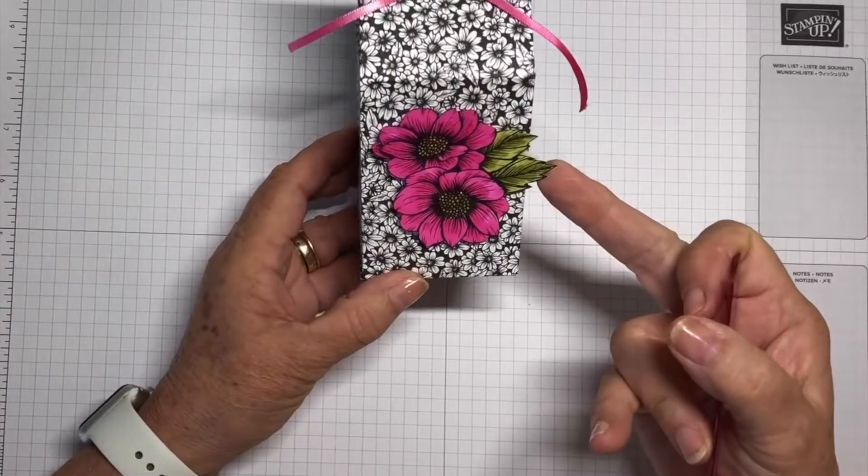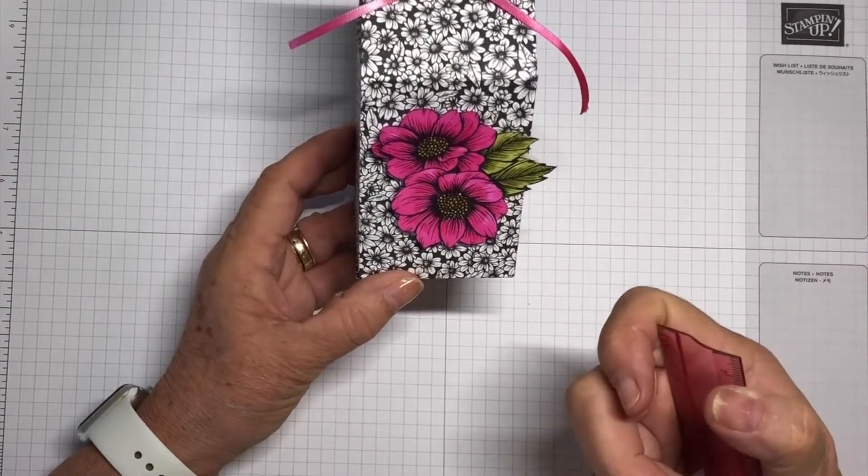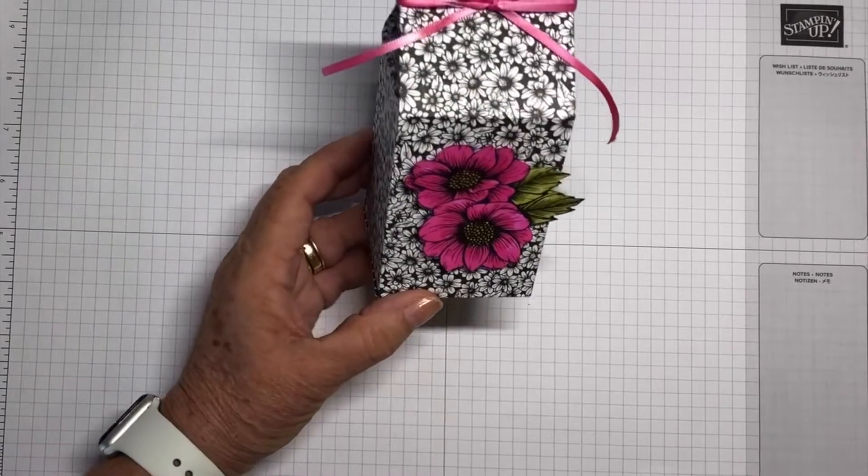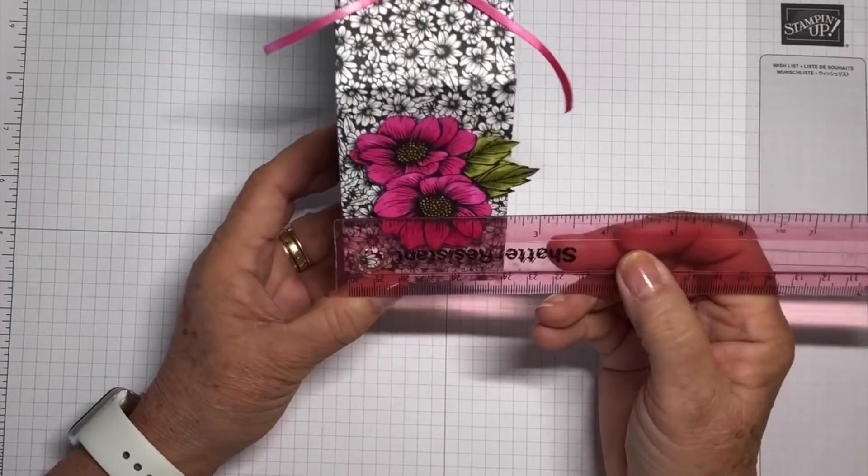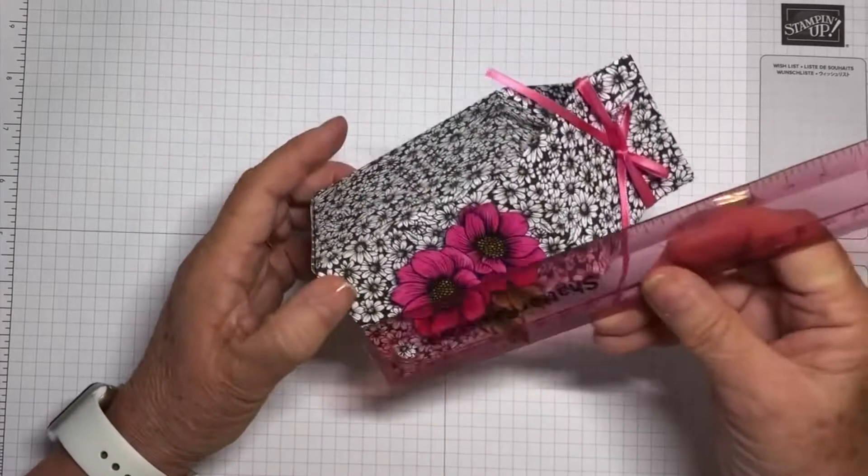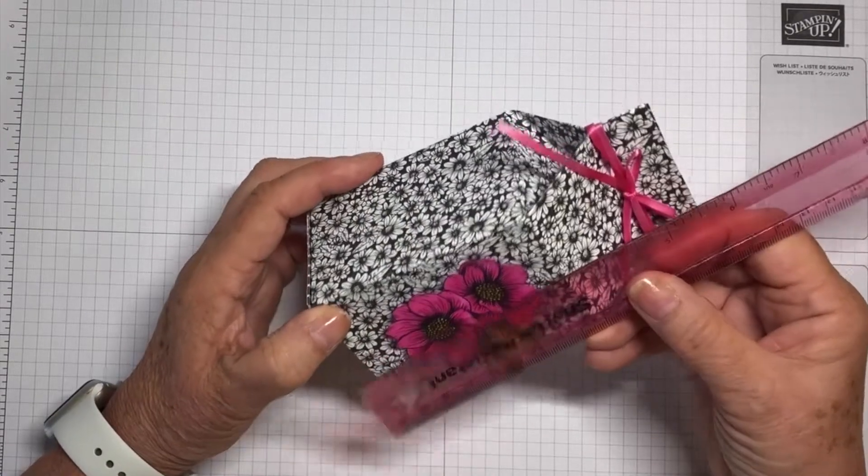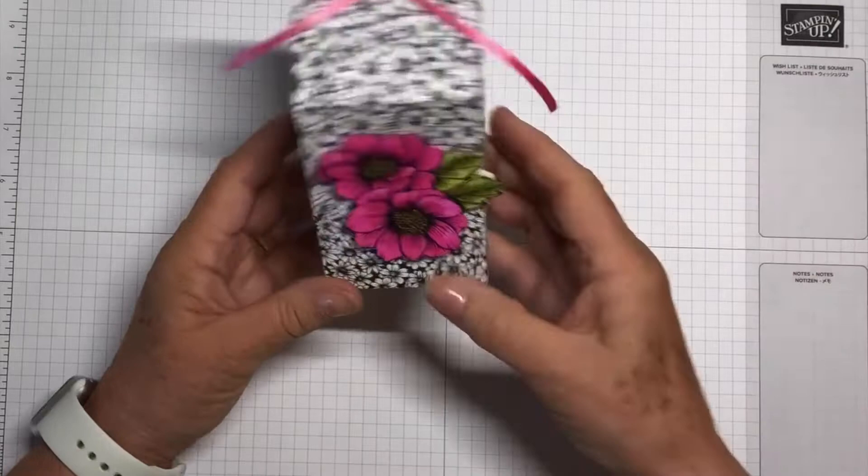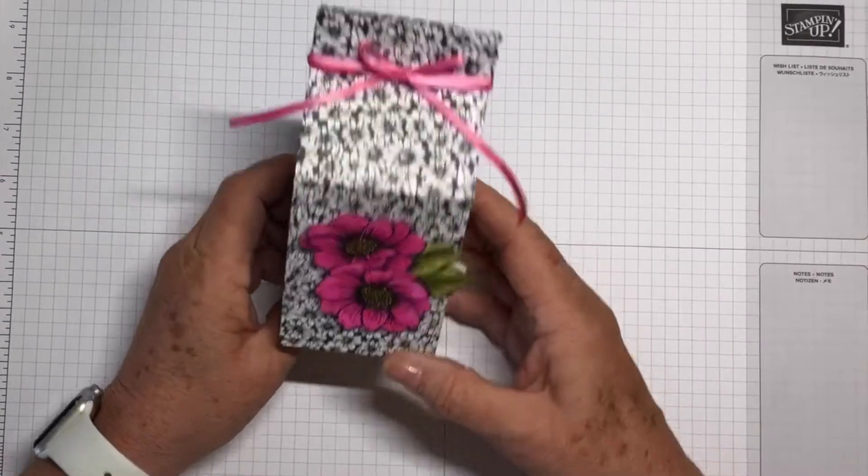The designer series paper is called True Love. The milk carton measures two and a half by two and a half by approximately five and three quarters, which is a lovely size for many gifts.